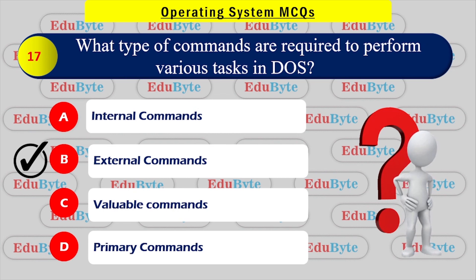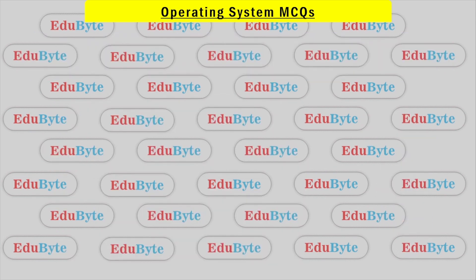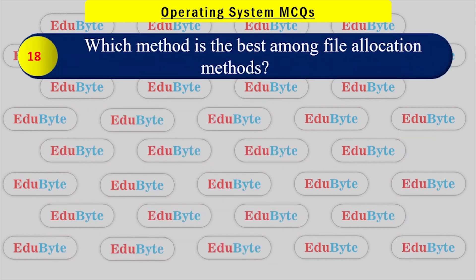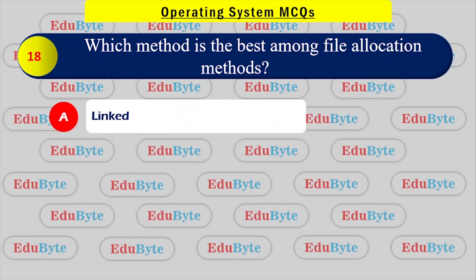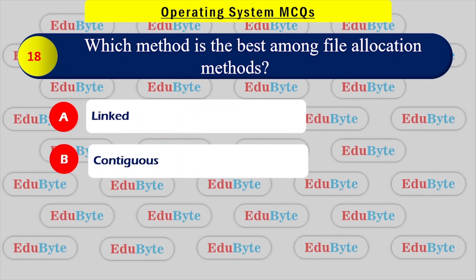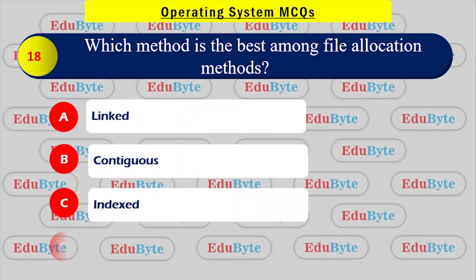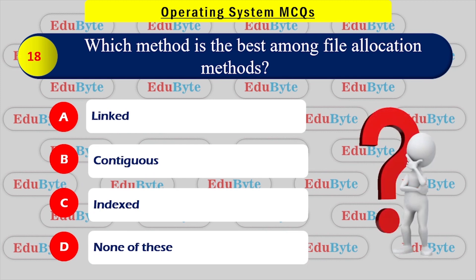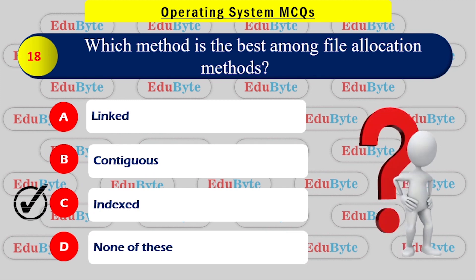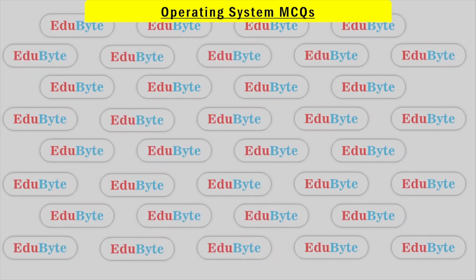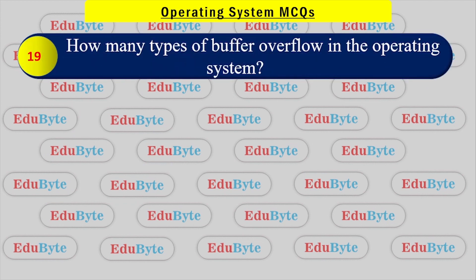Which method is the best among file allocation methods? Options: Link method, Contiguous method, Index method, None of these. The correct answer is the Index method.